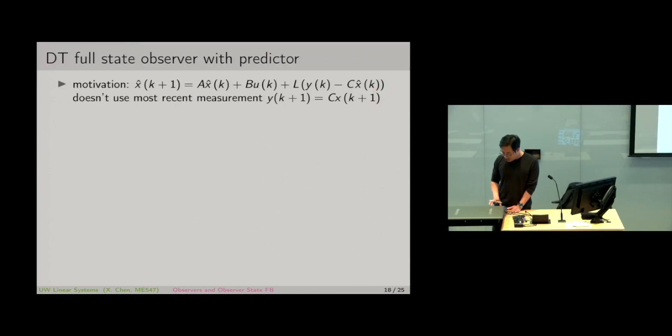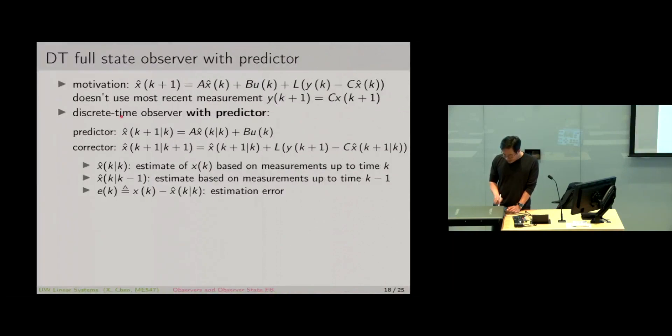The pioneers of modern control theory thought about this: How can we use this more recent measurement which intuitively should give us better results? Then the solution is as follows. The so-called discrete time observer with predictor and corrector form is as follows.